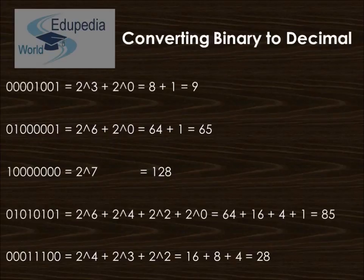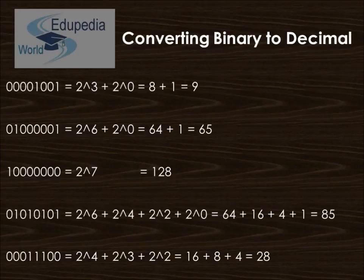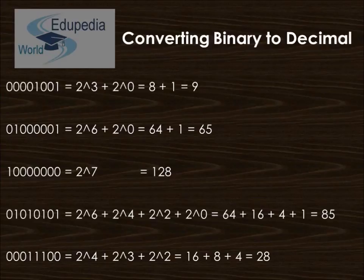In example one, bit positions 0 and 3 are on, giving us 2³ + 2⁰ = 8 + 1 = 9. So that binary number is equivalent to 9 in decimal. In example two, bit positions 6 and 0 are on, giving us 2⁶ + 2⁰ = 64 + 1 = 65. So that binary number is equivalent to 65 in decimal.